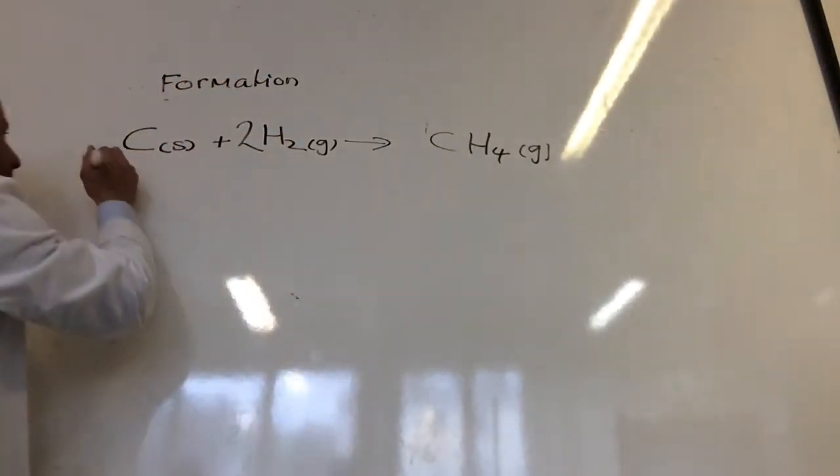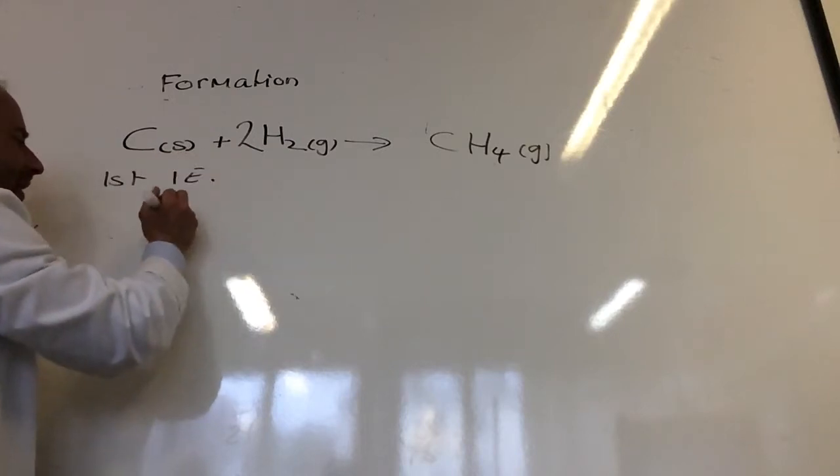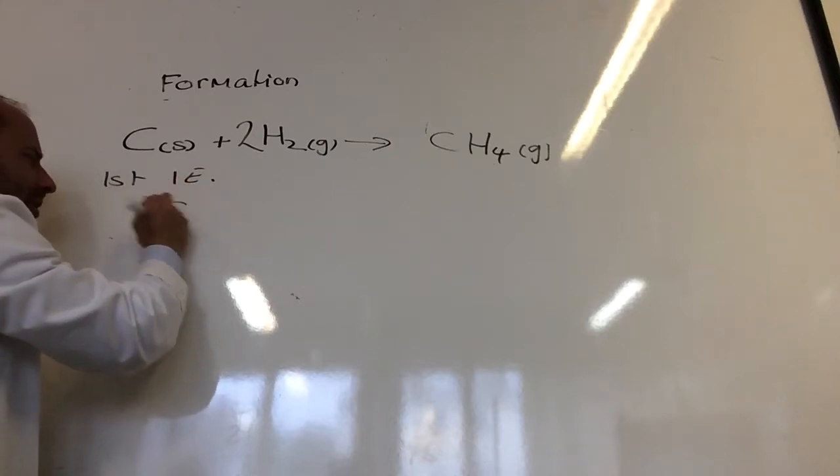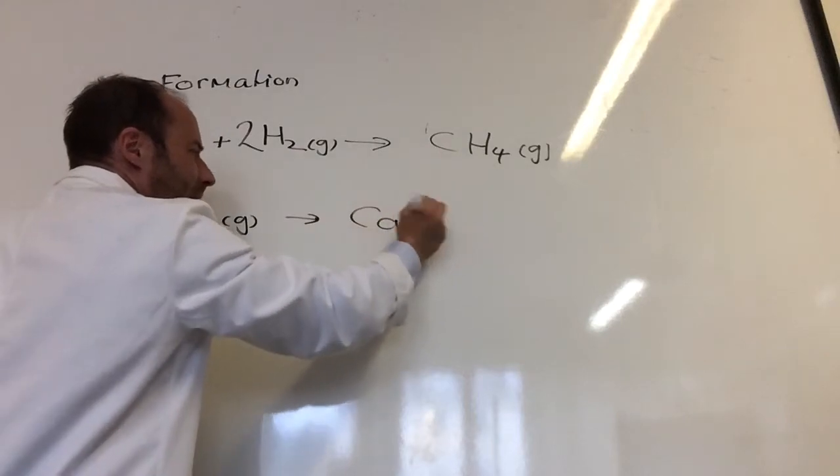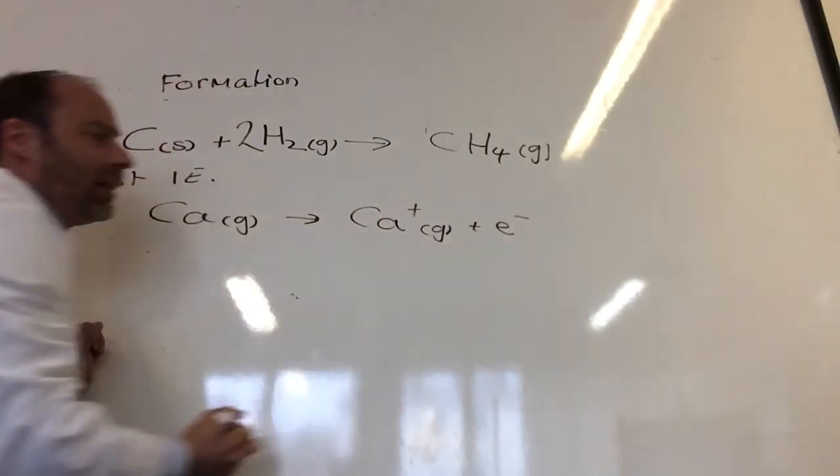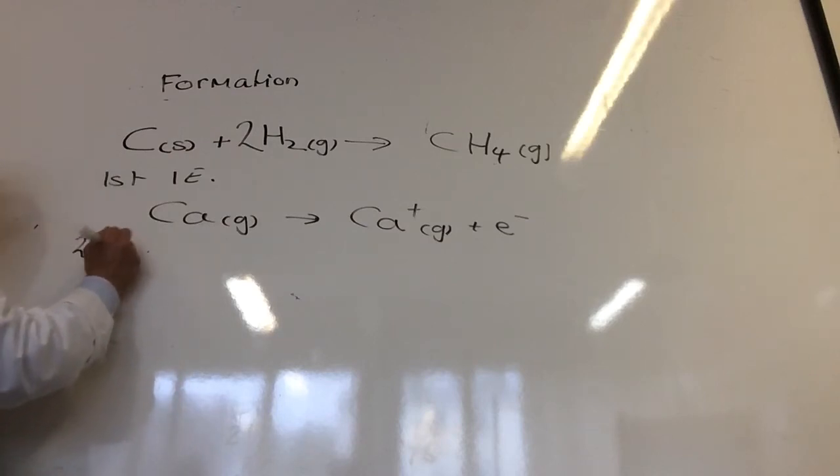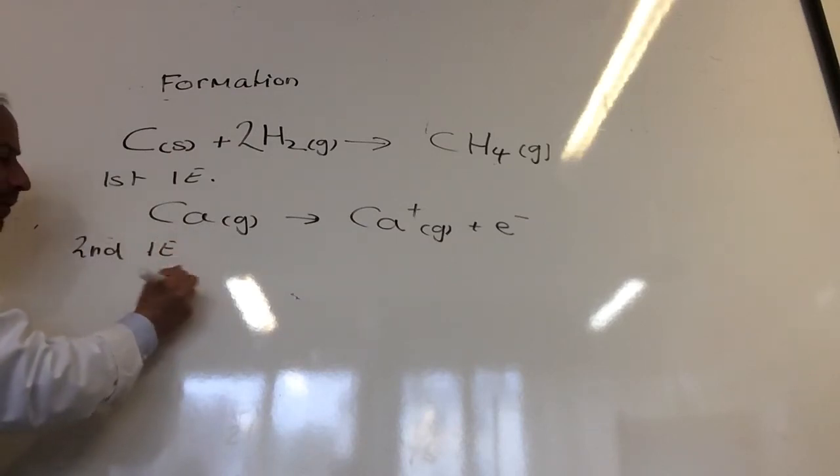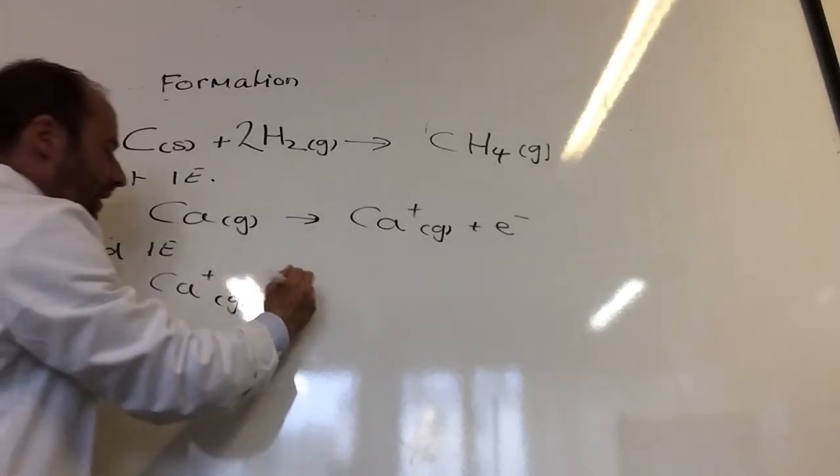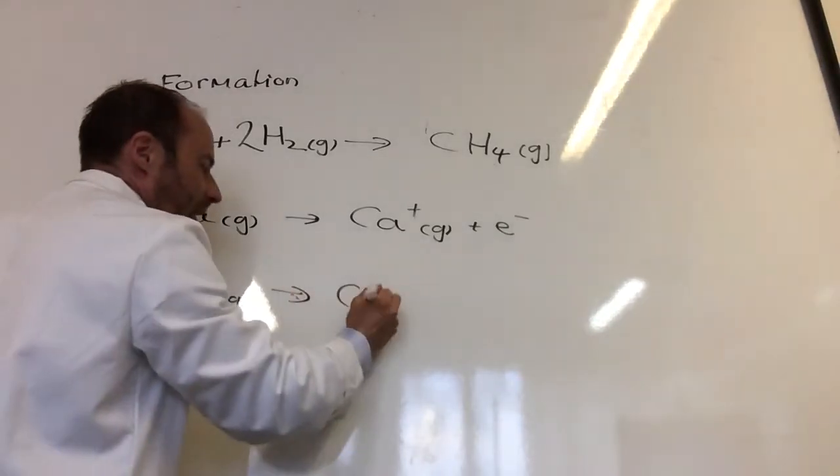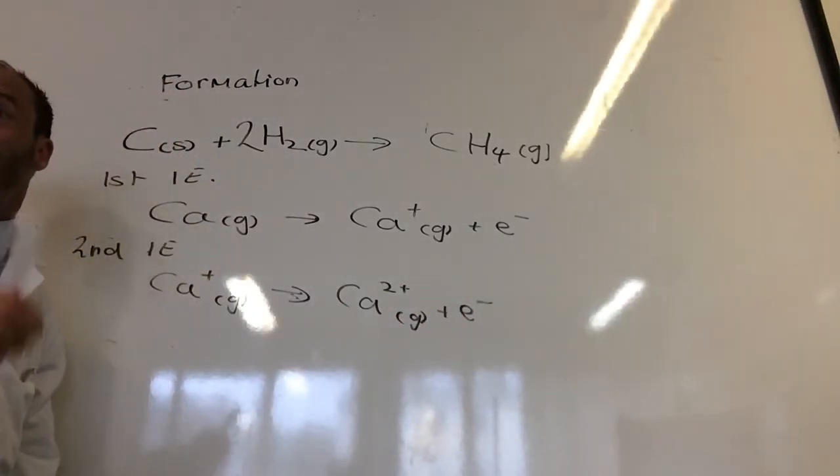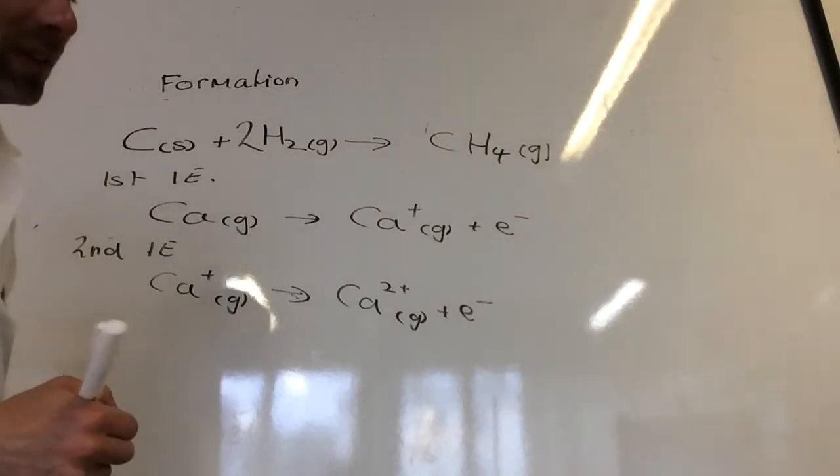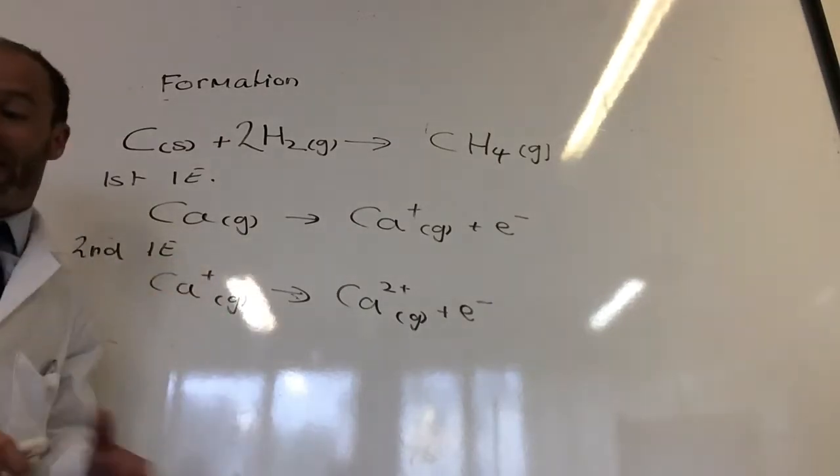How about first ionization energy? That is when we take one mole of gaseous atoms. So let's do calcium. In the gaseous state I would be making calcium plus in the gaseous state, plus one electron. And then I'd have the second ionization energy, which would be making the doubly charged ion. So calcium plus becoming calcium 2 plus gas, plus an electron. So those are the ionization energies you need to do.